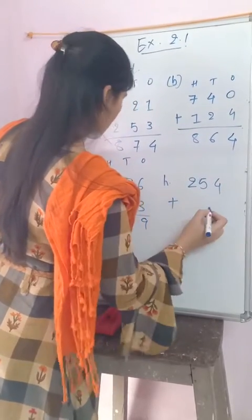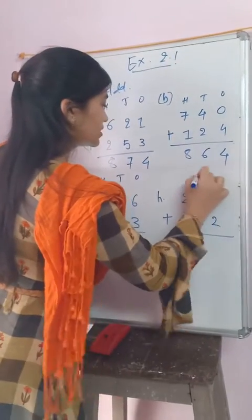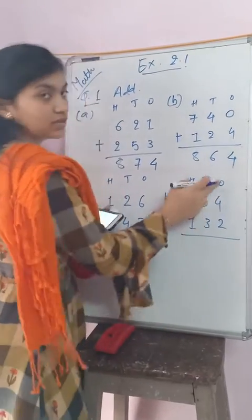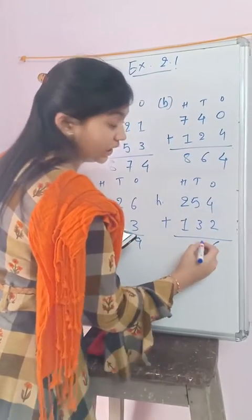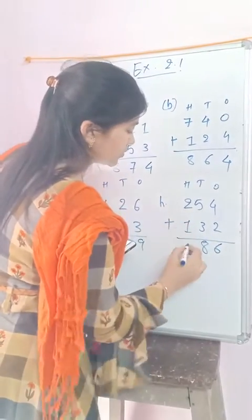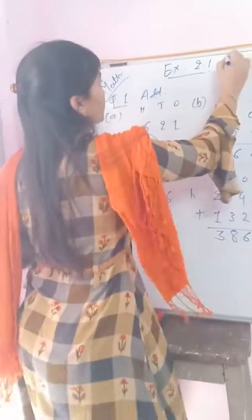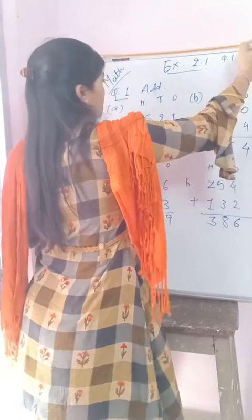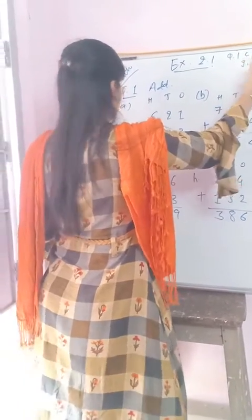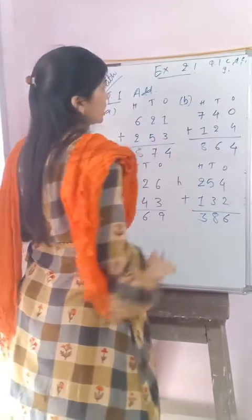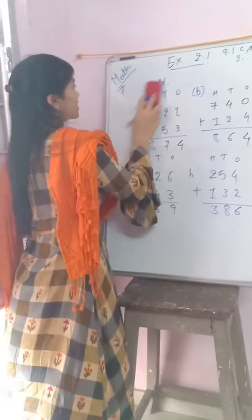Now I am solving h1: 154 plus 132. Ones, tens, hundreds. Starting from the ones place: four plus two equals six, five plus three equals eight, one plus two equals three. The answer is 286. That is question one, and the rest — c, d, e, g — are your homework. Now we are going to solve the next question.